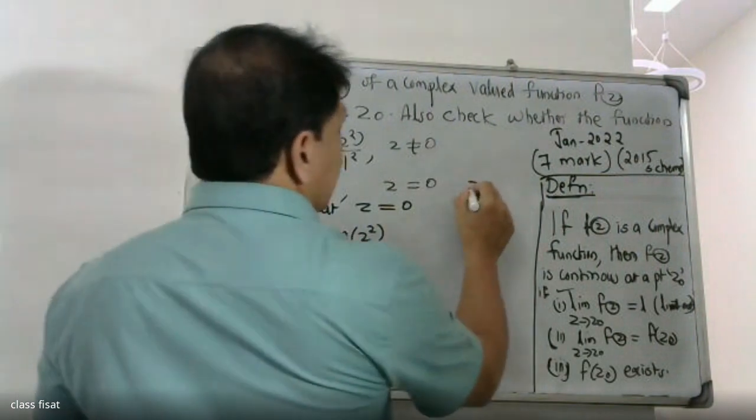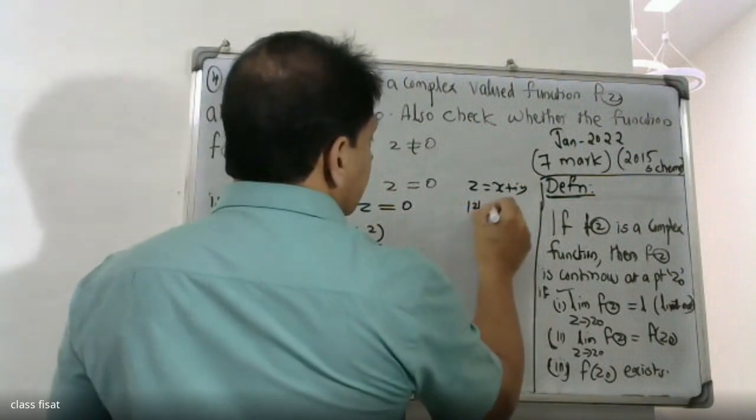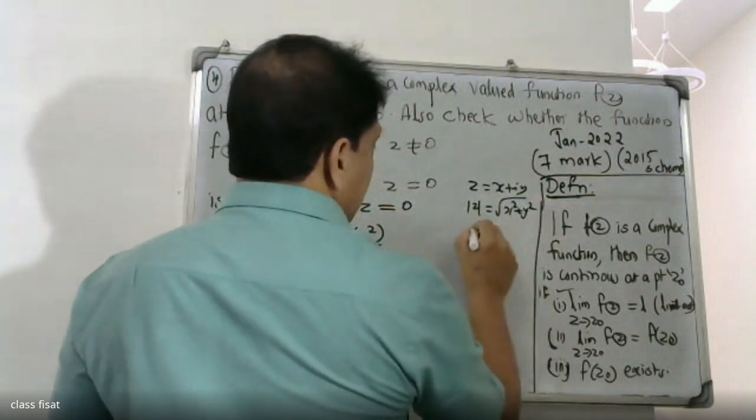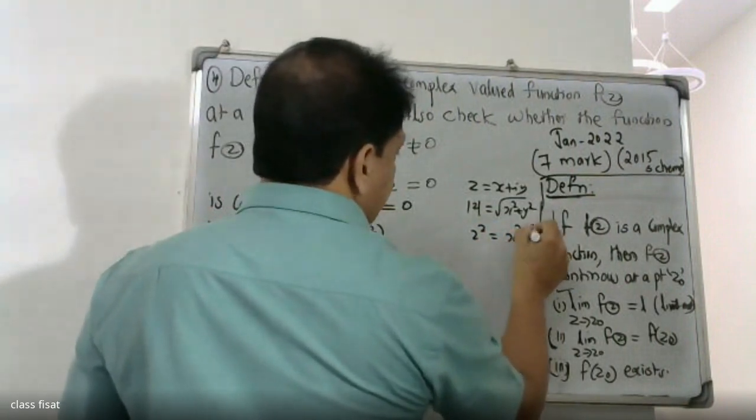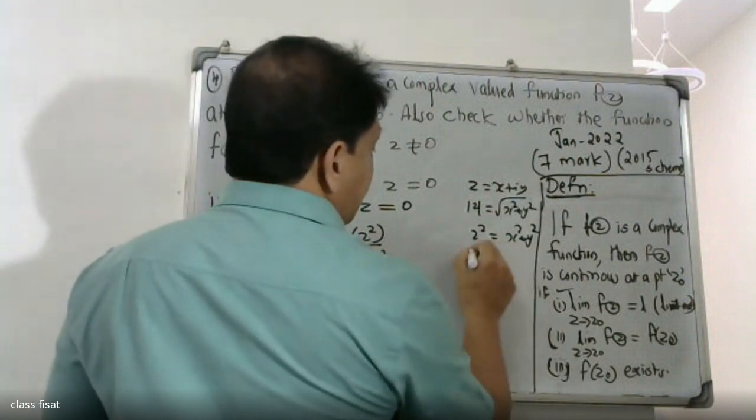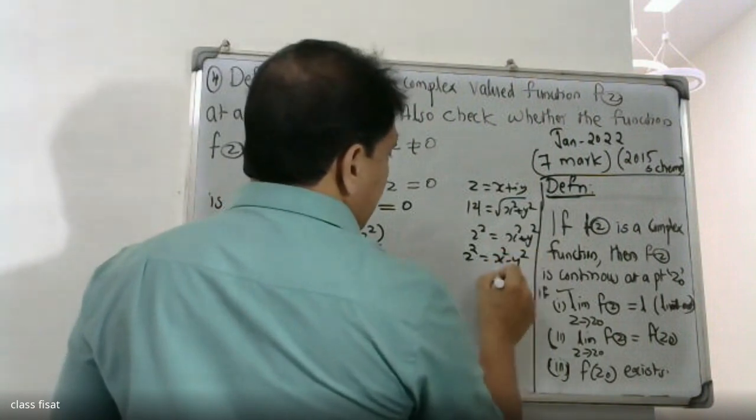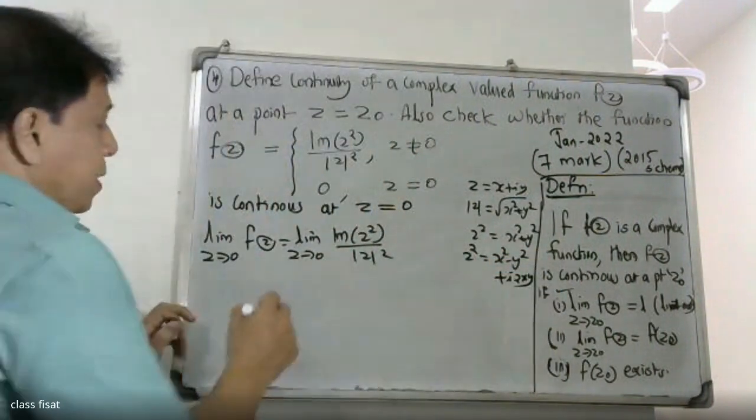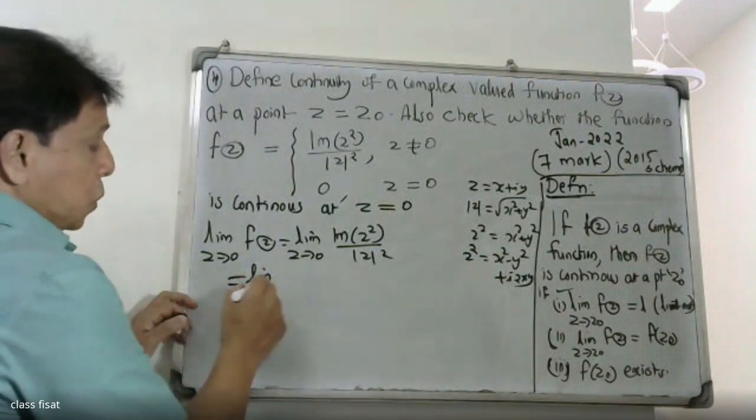Let z equal x plus iy. The modulus of z equals the square root of x² plus y². Then z² equals x² minus y² plus 2ixy. This equals the limit as z tends to zero.